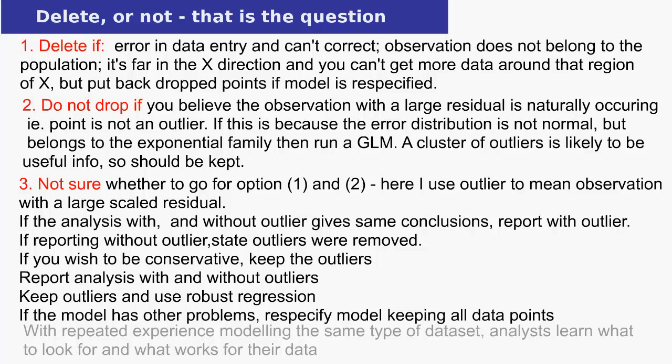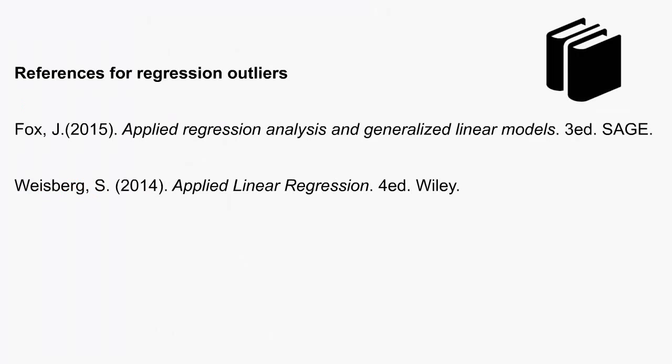Regarding observations not belonging to a population: for example, if your data is taken from men only, then observations from women do not belong to this population. The GLM — Generalized Linear Models — is a class of regression model where the error term need not be normally distributed; logistic regression is an example. In summary, to get regression outliers you need a model, so outlying observations in one model may not be outlying in another. Judgment is needed when dealing with large residuals, so not everyone will agree. If outliers are present, they should make up only a tiny proportion of the data. If you delete an outlier, refit, and find more outliers forming a cluster, it suggests your initial model was bad. A related topic is influential observations — these distort output much more than non-influential outliers, so look for these first.